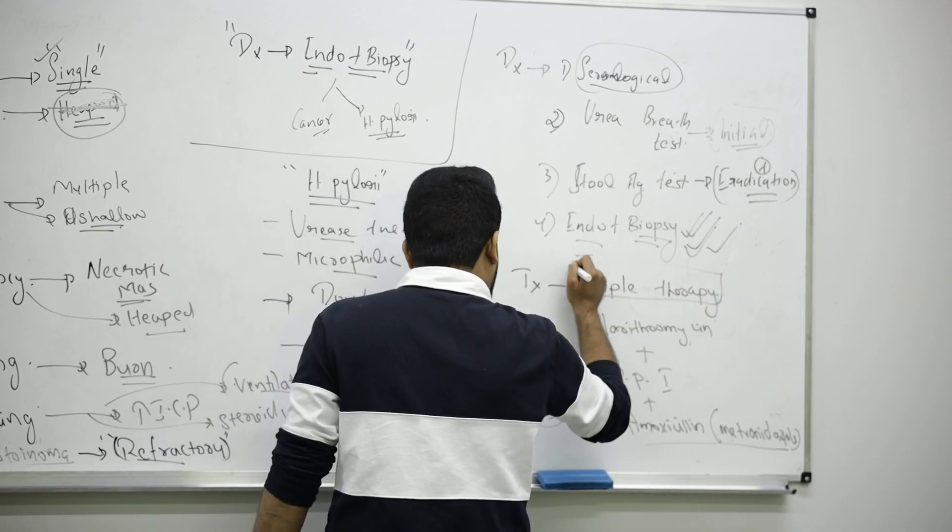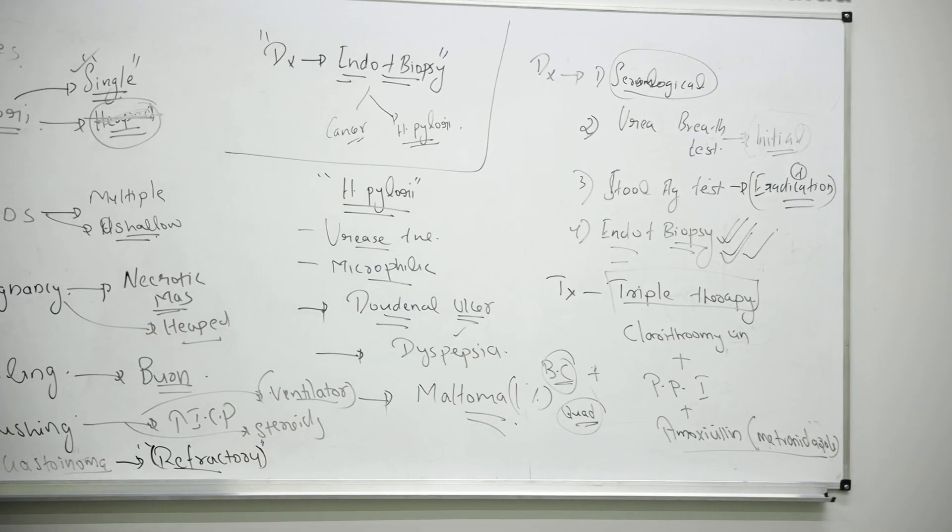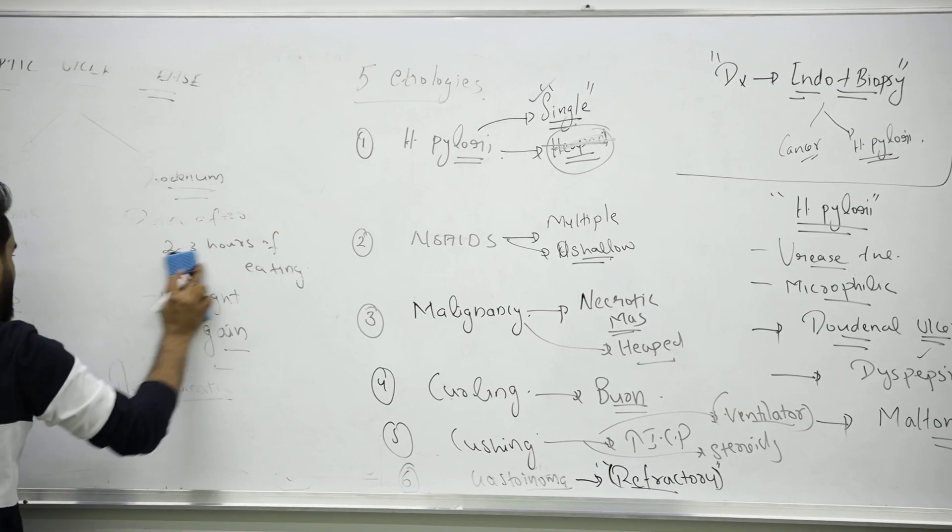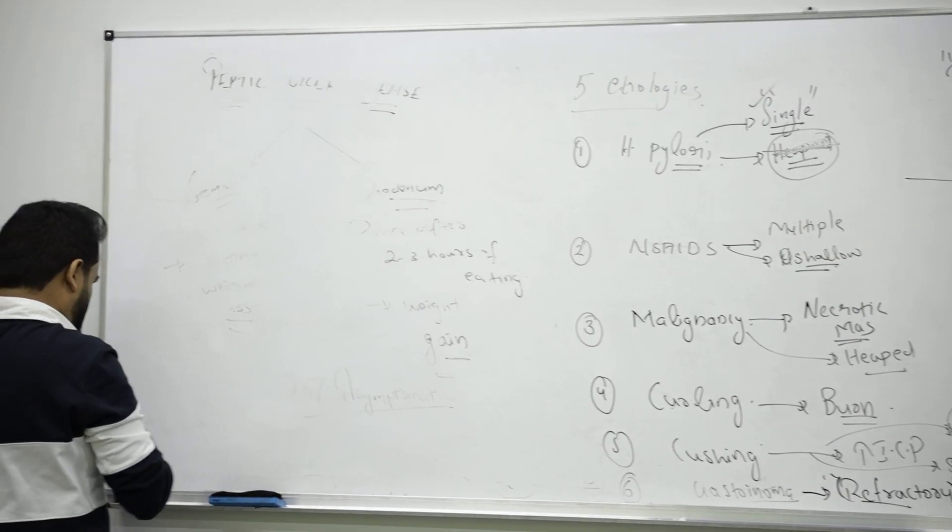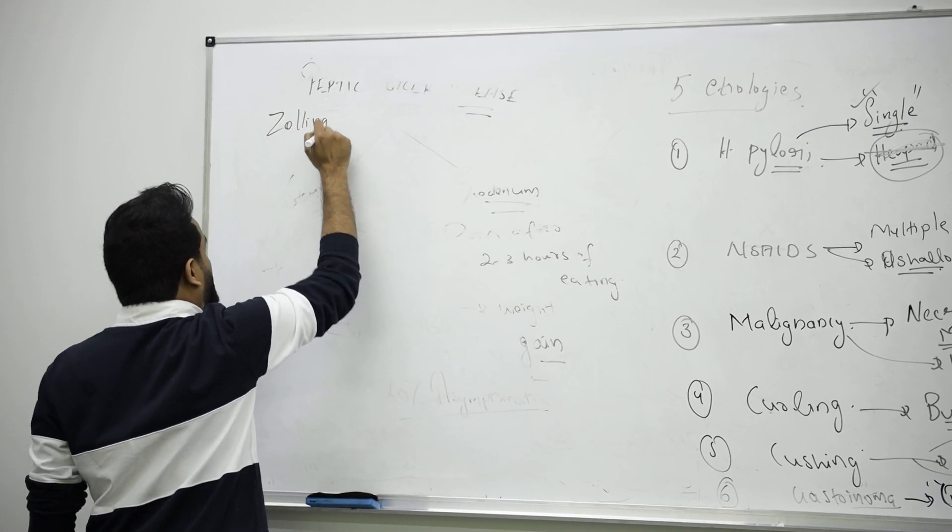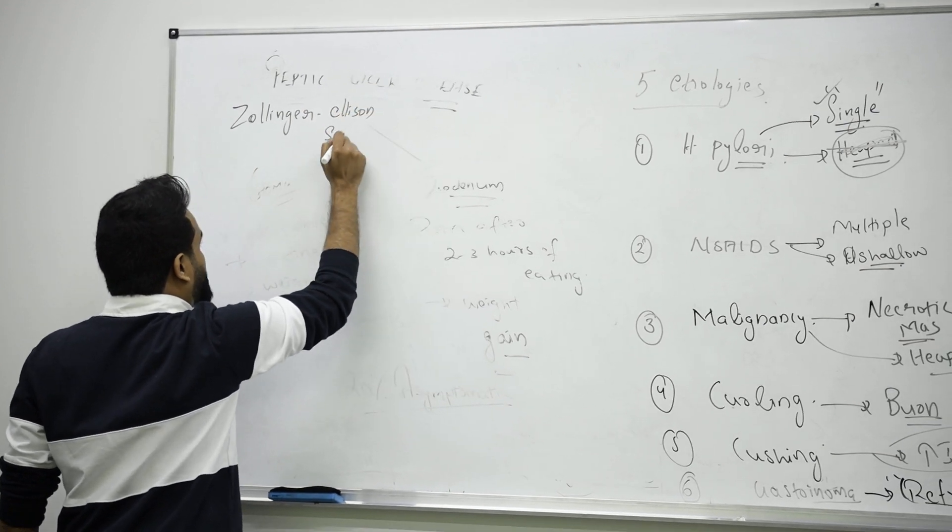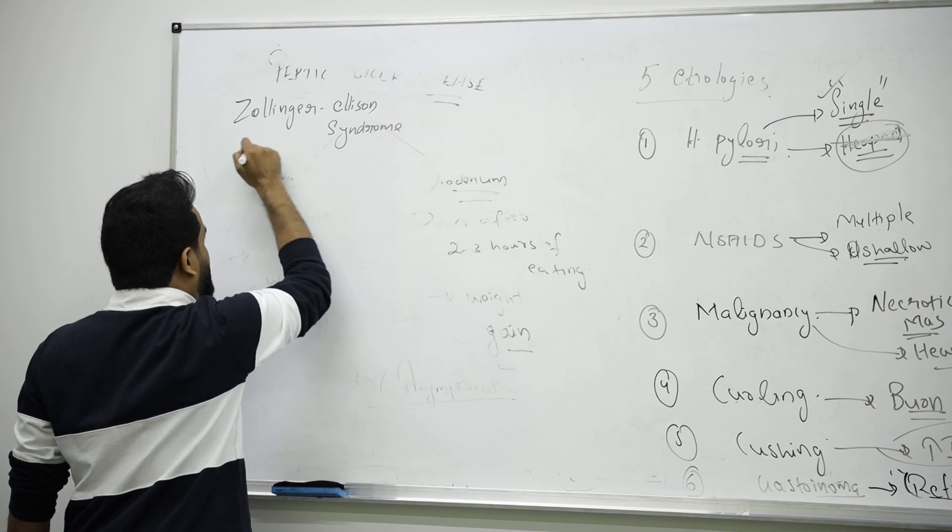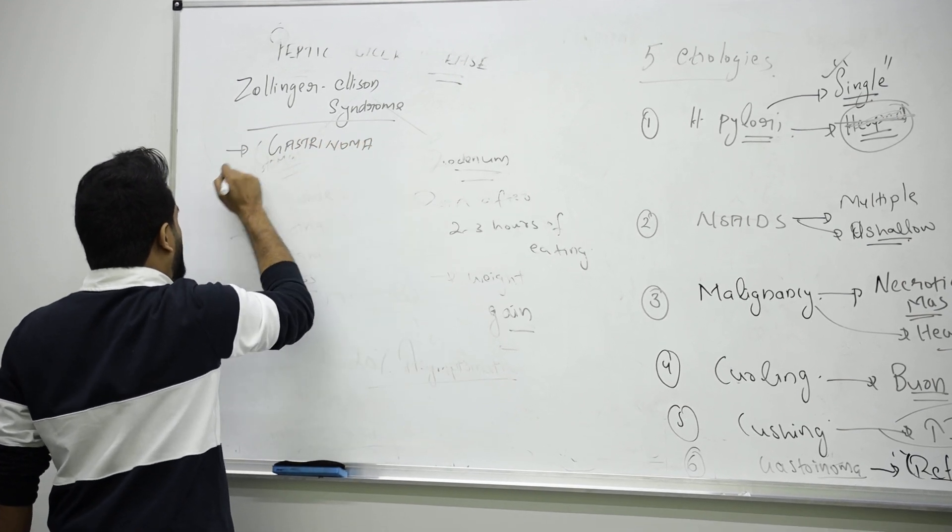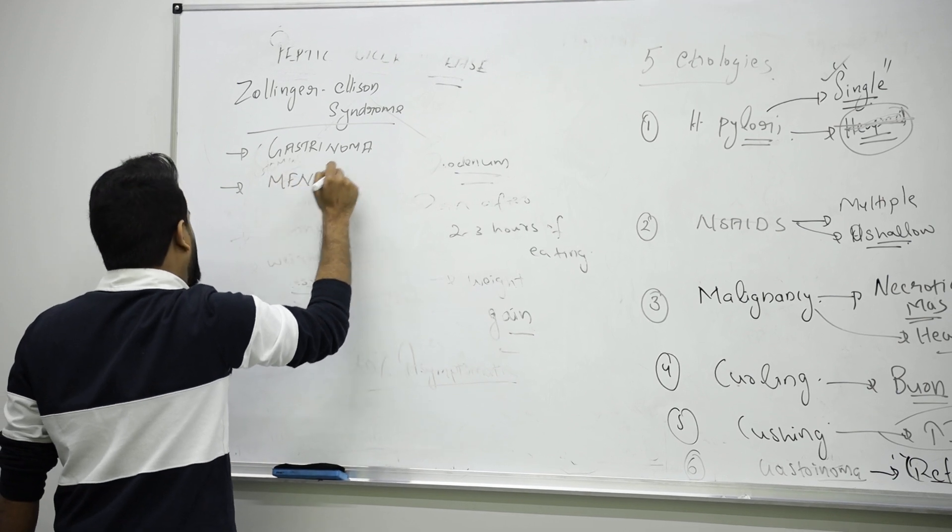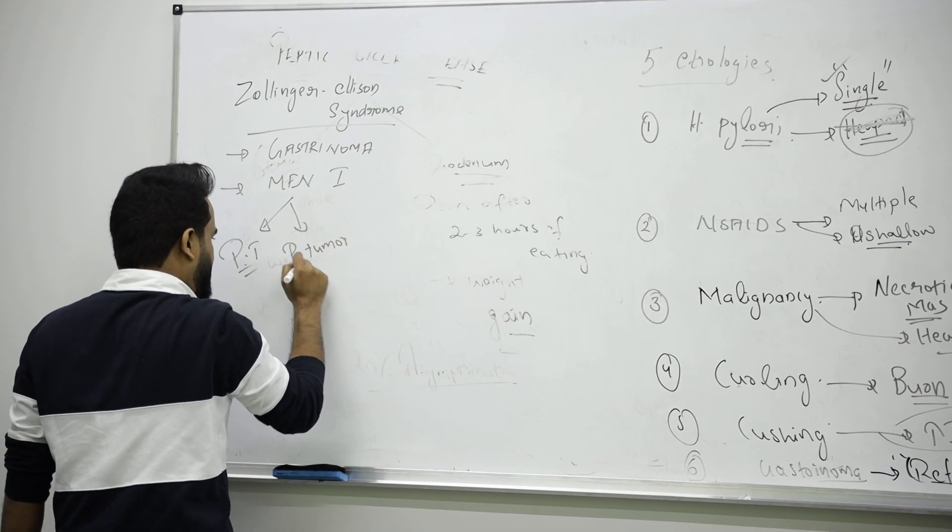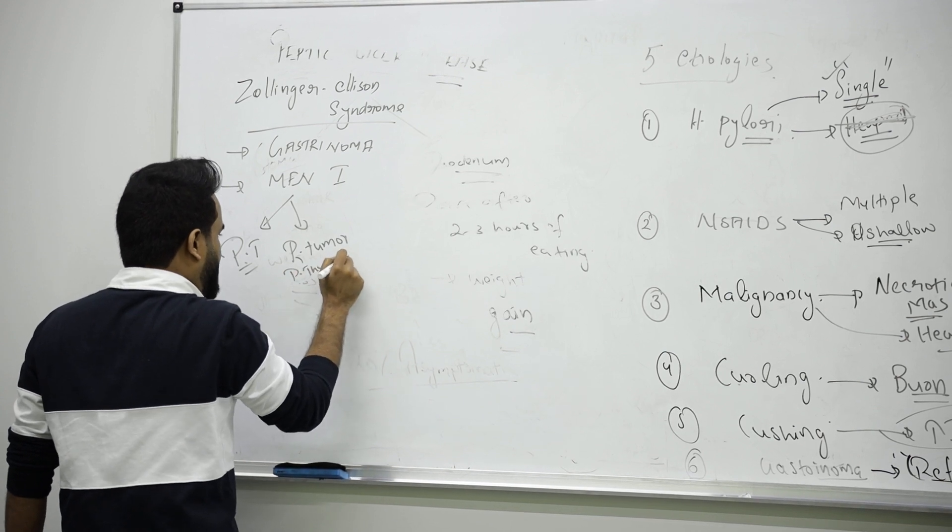Next one is recurrent ulcer, that is Zollinger-Ellison syndrome. The pathophysiology here is because of gastrinoma, a tumor in the pancreas. They are associated with the syndrome called MEN1. Along with MEN1, you will have pancreatic tumor, parathyroid tumor, and pituitary tumor.